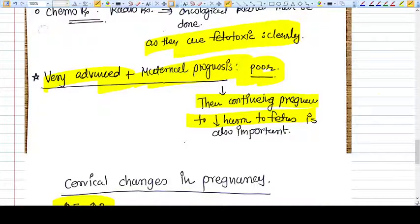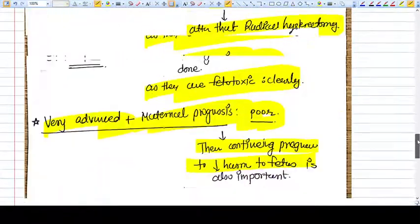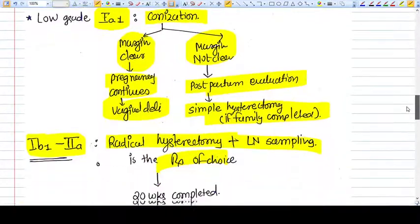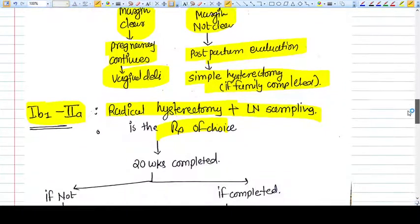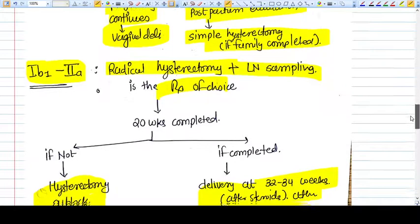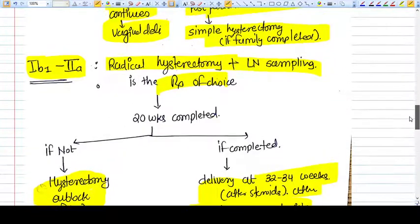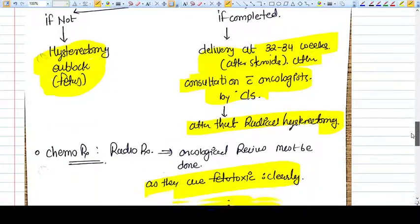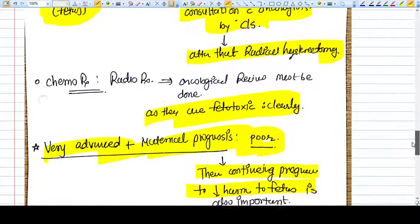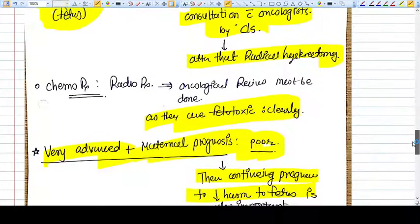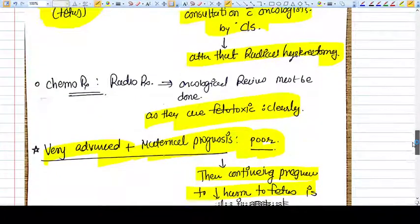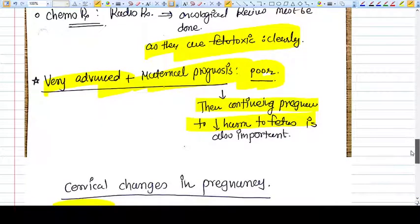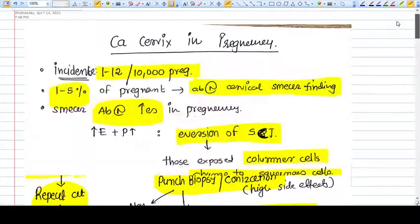To summarize: if the cancer stage is 1a1, you do conization and don't terminate the pregnancy. If the stage is 1b1 or 2a, you terminate the pregnancy if it is less than 20 weeks. If more than 20 weeks, you should wait for delivery after discussing with the oncologist and the patient. Chemotherapy and radiotherapy should be avoided, and if the cancer is in advanced stage, you can discuss palliative treatment with the patient.